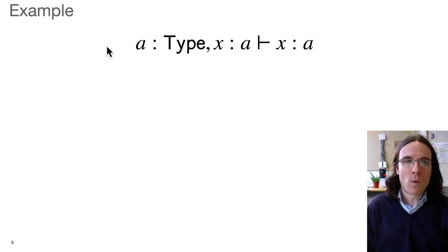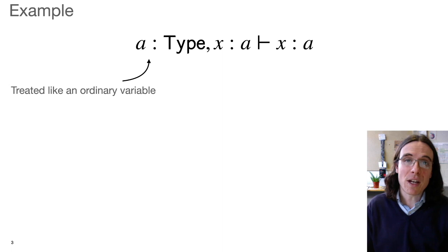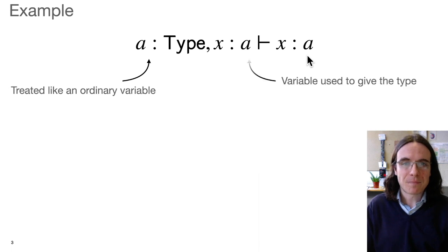So let's start with the following typing judgment of a dependent type theory like Martin Luff's. The subject of this judgment is a term X, which is a variable, and we can see it has type A, and this A is itself determined by another variable. So in a dependent type theory, our variables can be used both in terms and at the type level. We can see that A was used both here to form the type of X and over here to form the type of the subject.